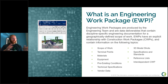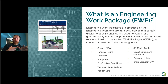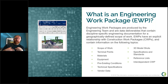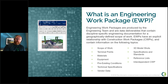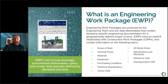An EWP contains: scope of work and terminal points, a material takeoff, equipment included (pumps, motors, etc.), pre-existing conditions, technical specifications, vendor data (especially for equipment packages), 3D model shots for visual clarity, reference lists, and which CWP it relates to. The EWP includes drawings, procurement deliverables, specs, and vendor data, and is typically defined by discipline and area, with more granularity possible depending on project complexity.